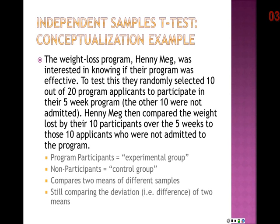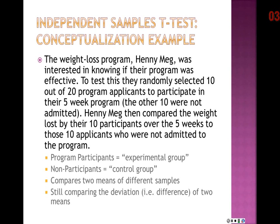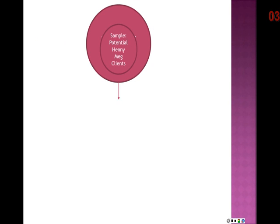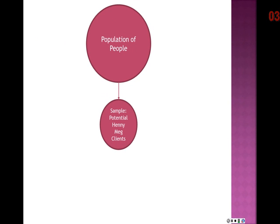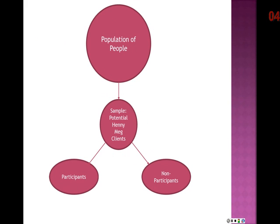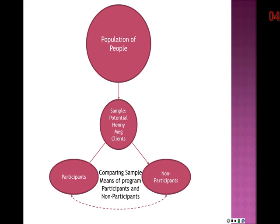Just like other t-tests, we're comparing the difference between two means within two groups. We have a population of people, a sub-sample of potential Hennie Mag clients, and we break those into two samples—participants versus non-participants—then compare the average weight loss of participants versus non-participants.